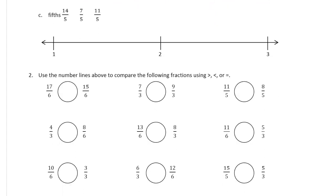And now we're looking at fifths. Starting at 1. Fifths mean 1, 2, 3, 4 divisions between each whole. 1, 2, 3, 4. And 1 whole is 5 fifths.